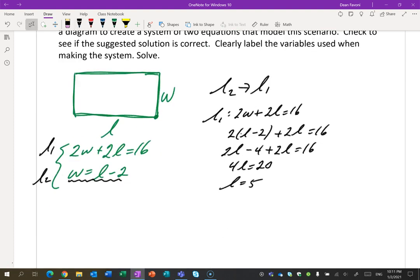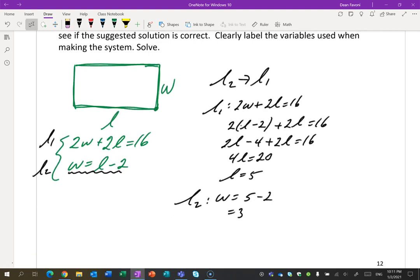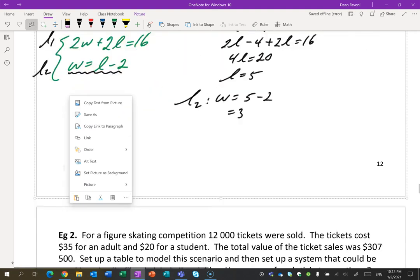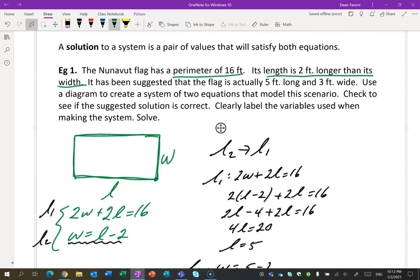And now, if L is 5, I've got to go into line 2. What's W? It's L, which is 5, minus 2 is 3. Hey, that's what they suggested. So the difference in what you're doing now, like all of this, you've done before. It's creating the system that's going to be trouble. What I should have said here at the very start, this is a bit of a mistake on my part, I should have said L equals length and W equals width.